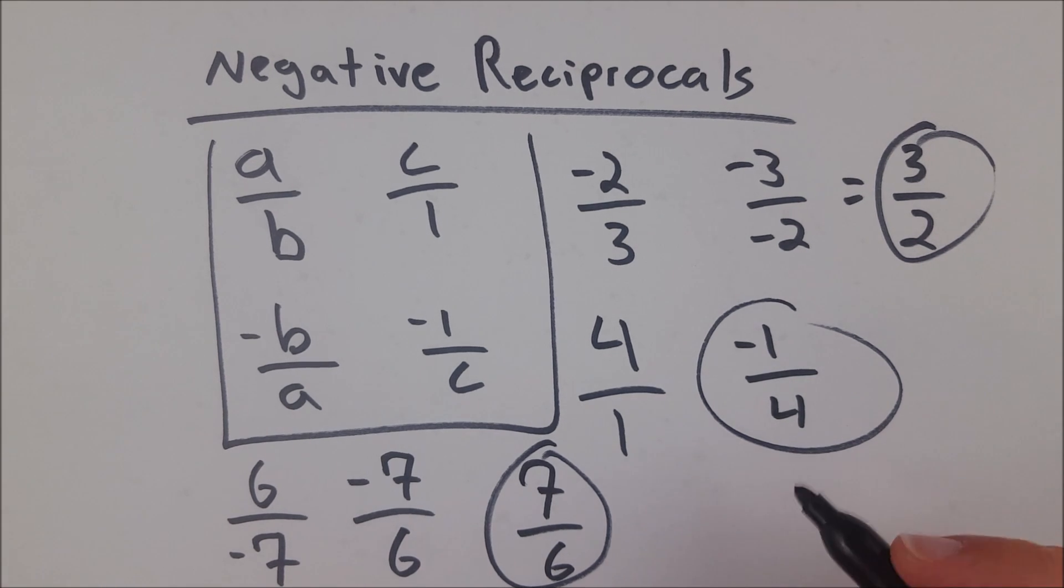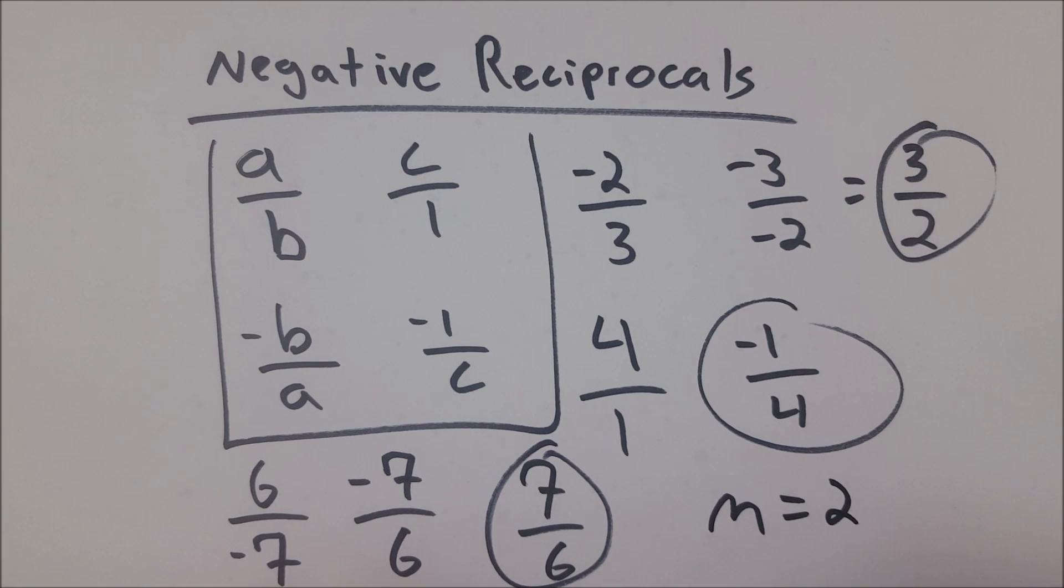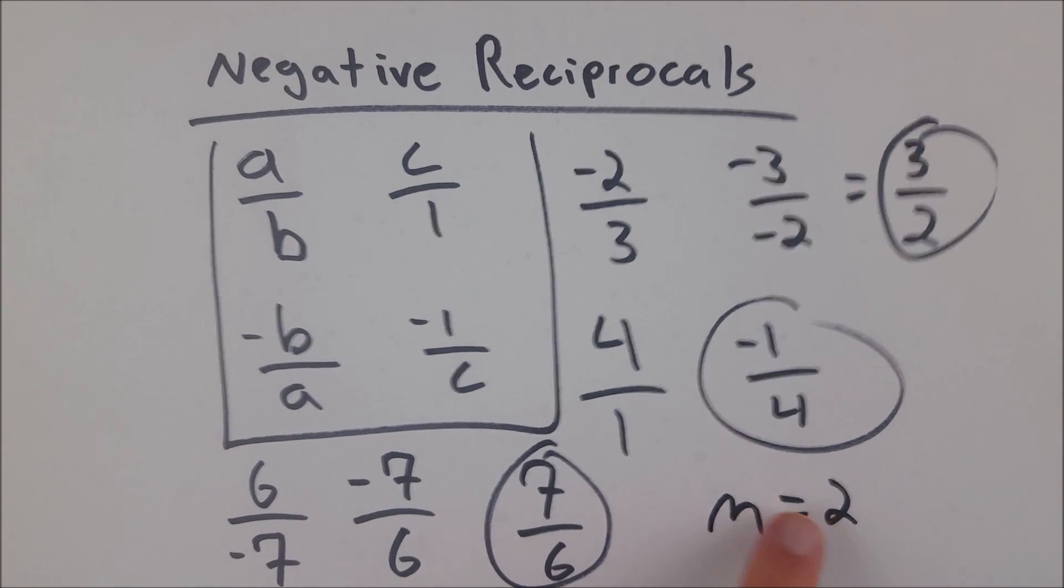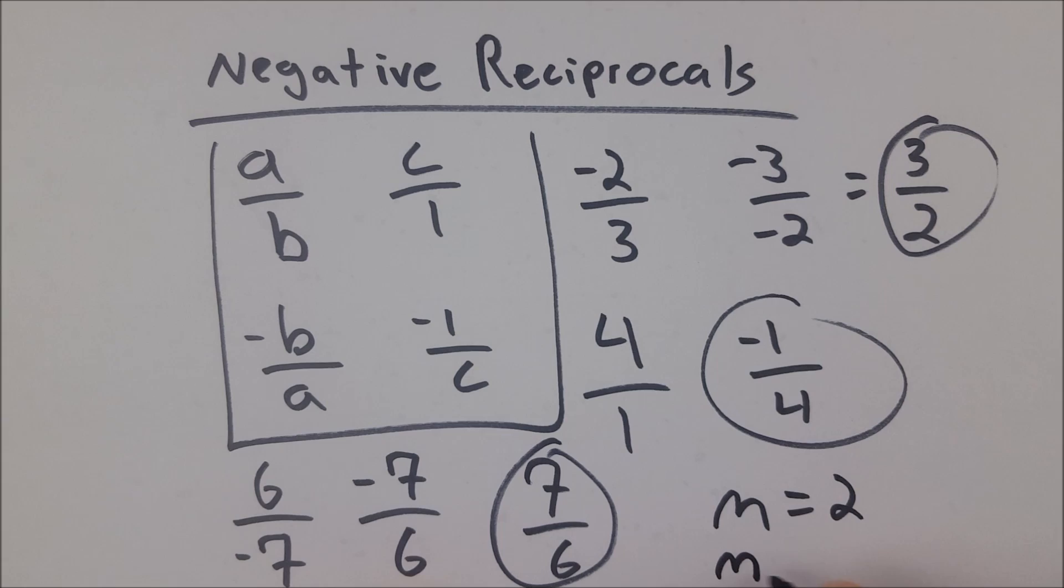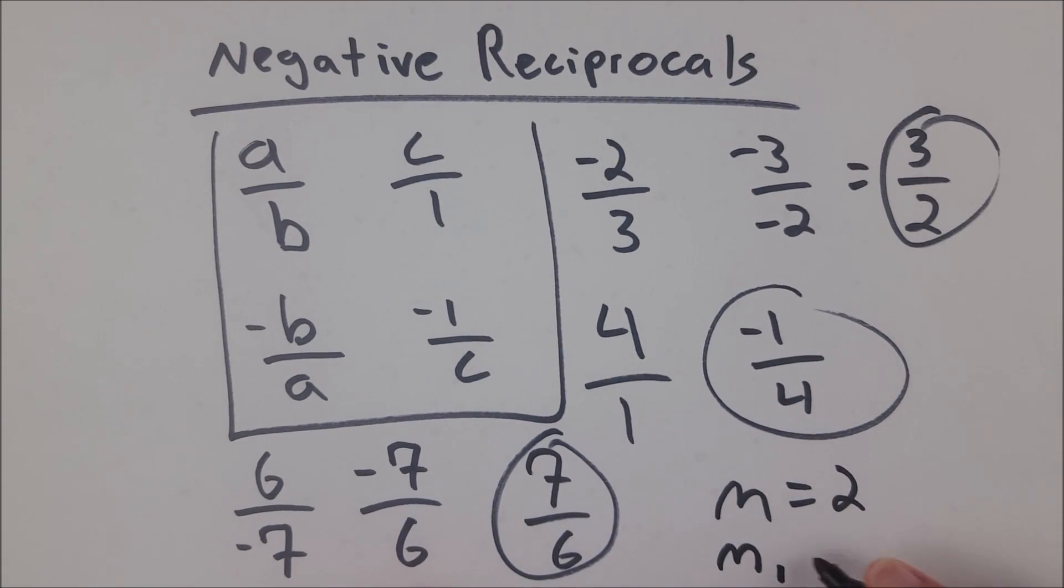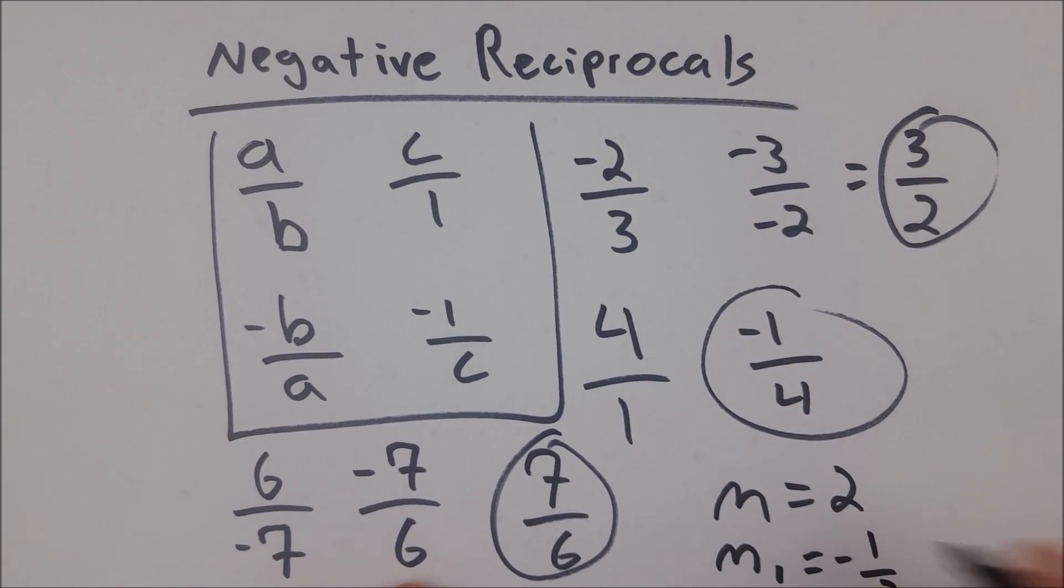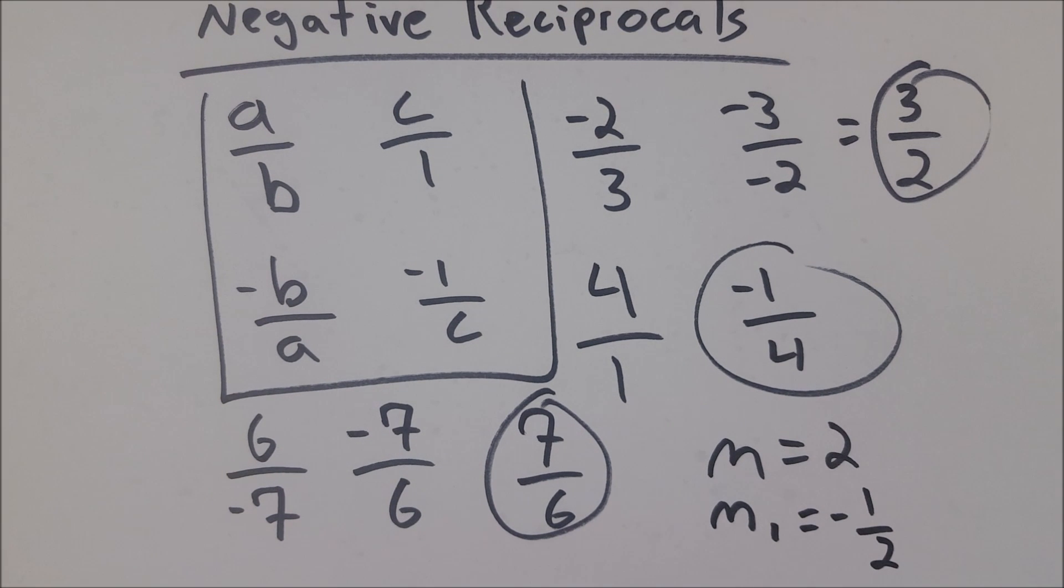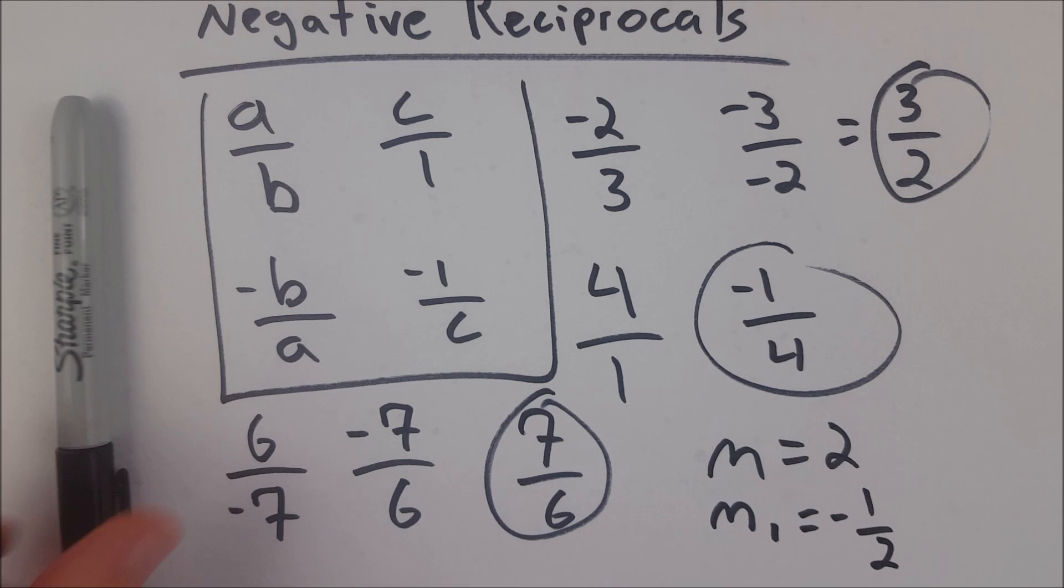So if you take some line that has a slope, we'll say m equals 2, then any line perpendicular to the line with this slope would have a slope, let's call it m sub 1, of negative 1 half, because negative 1 half is a negative reciprocal of 2, and perpendicular lines, like I said, have slopes that are negative reciprocals of each other.